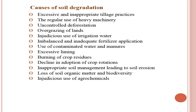The general causes of soil degradation include: excessive and inappropriate tillage — many times farmers do 6 to 8 plowings, making soil liable to erosion; regular use of heavy machinery causing crusting or hardpan formation; uncontrolled deforestation; overgrazing; and injudicious use of irrigation water, particularly in canal-irrigated areas where excess water leads to waterlogging and salinity development.